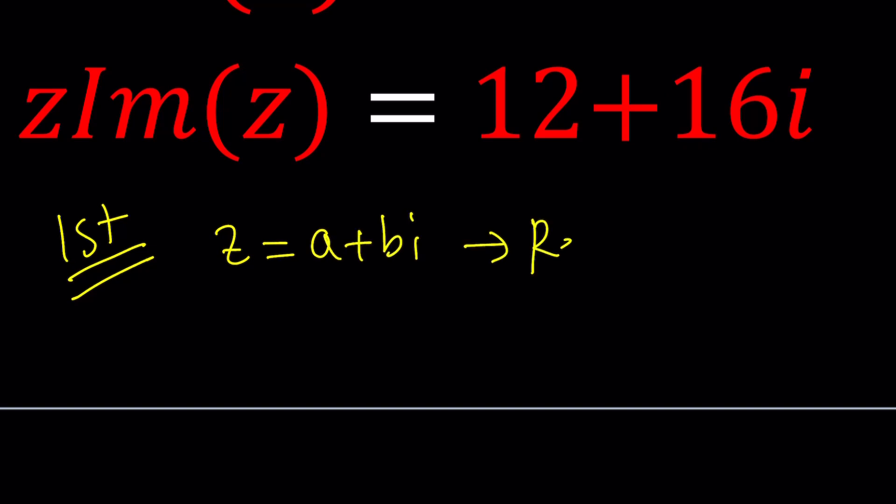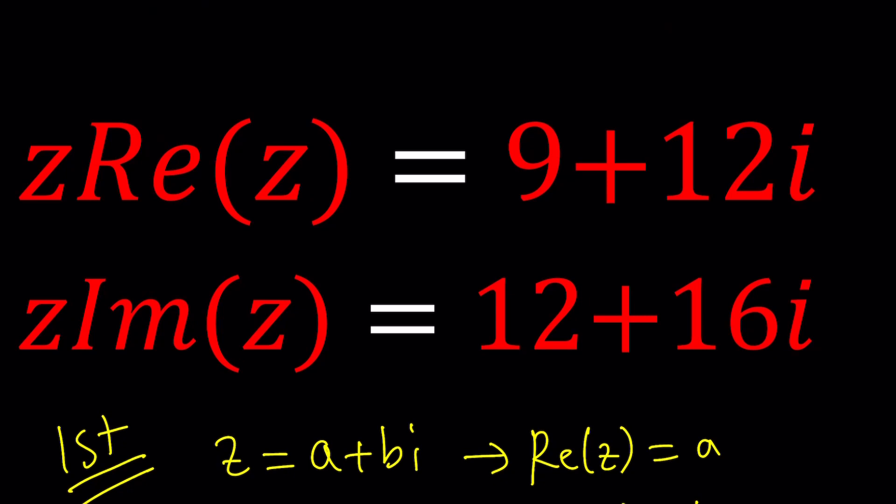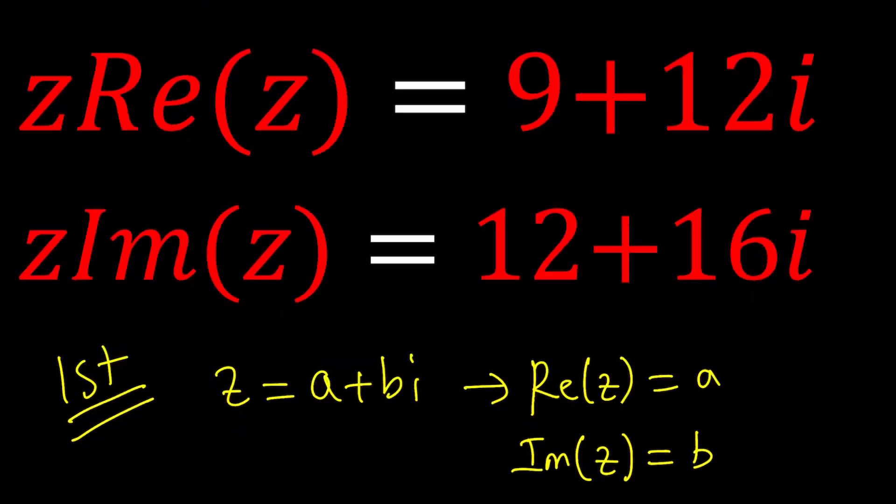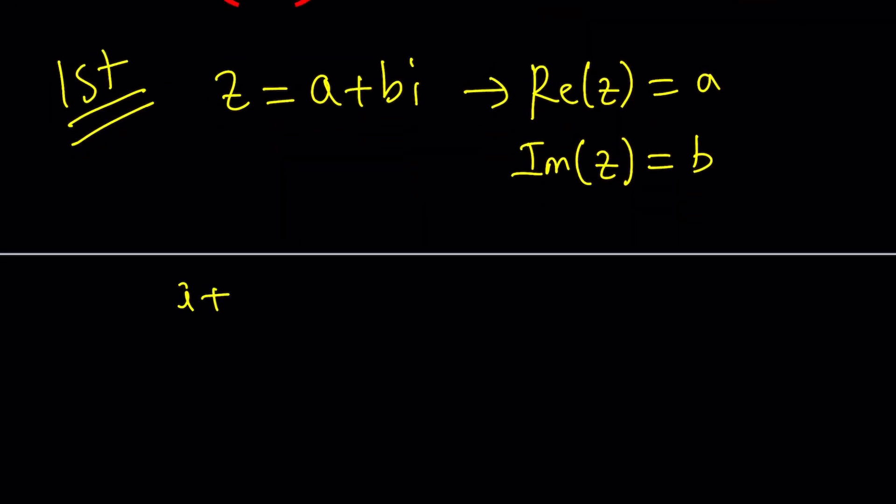automatically, the real part of Z is going to be A, and the imaginary part of Z is going to be B. And we'll plug everything into these equations. Z multiplied by real part of Z is going to be A plus BI multiplied by A equals 9 plus 12i. And A plus BI multiplied by B equals 12 plus 16i.